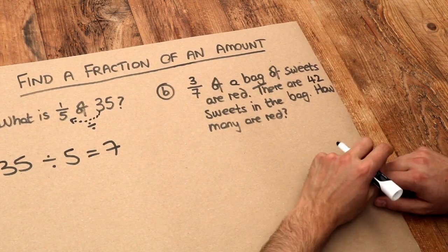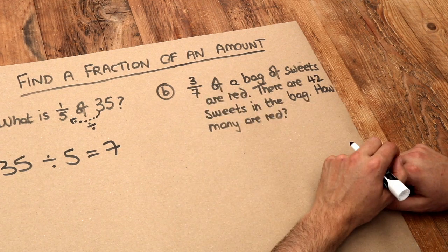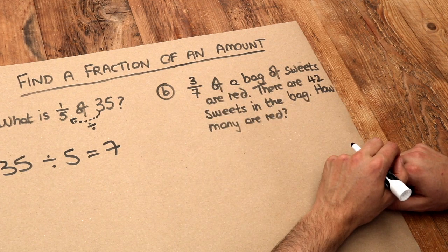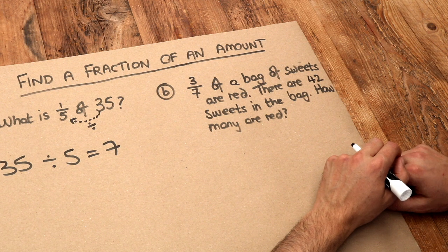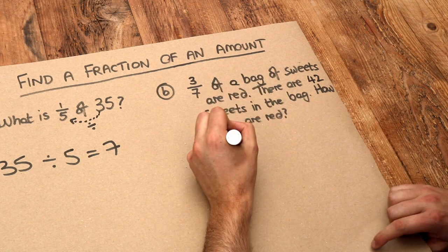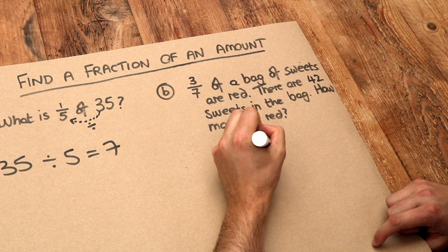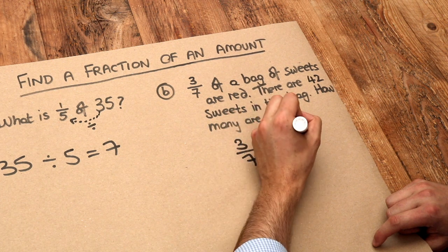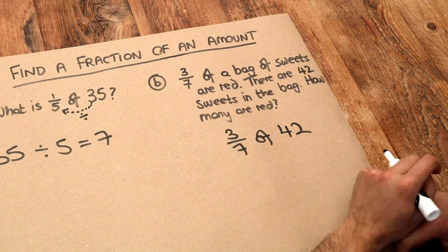This second one is a word problem: 3 sevenths of a bag of sweets are red. There are 42 sweets in a bag. How many are red? So we want to find 3 sevenths of the 42 sweets because 3 sevenths of those 42 sweets are red.